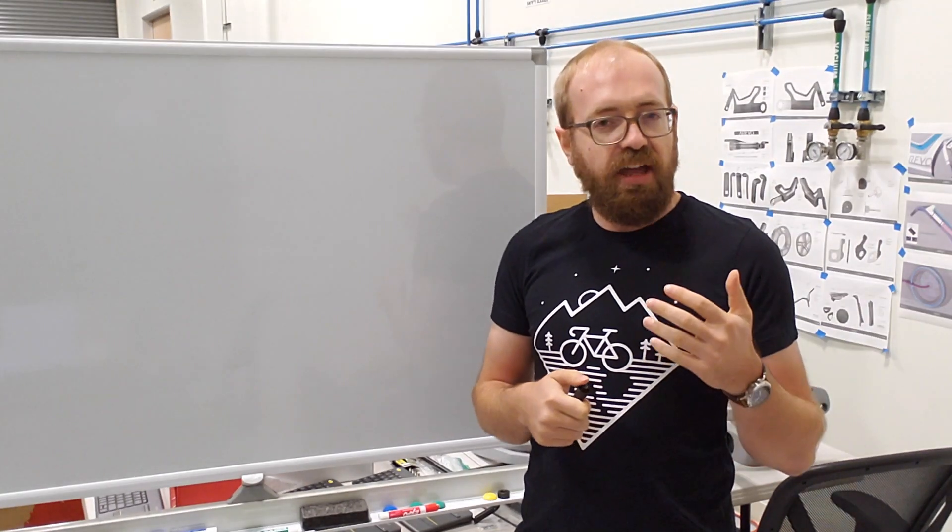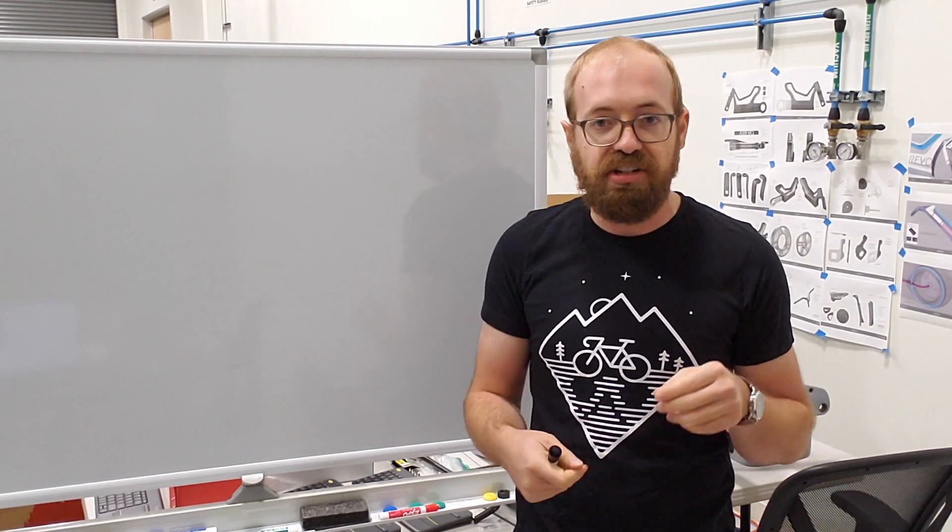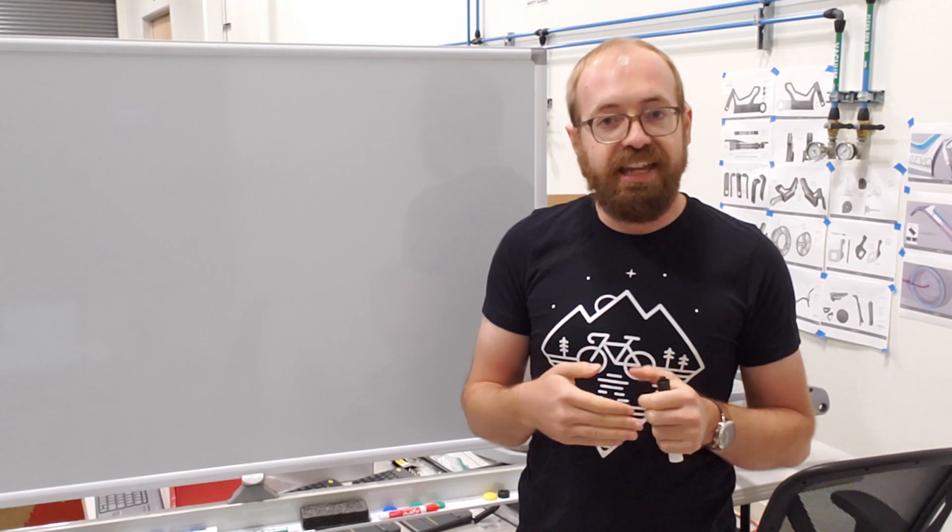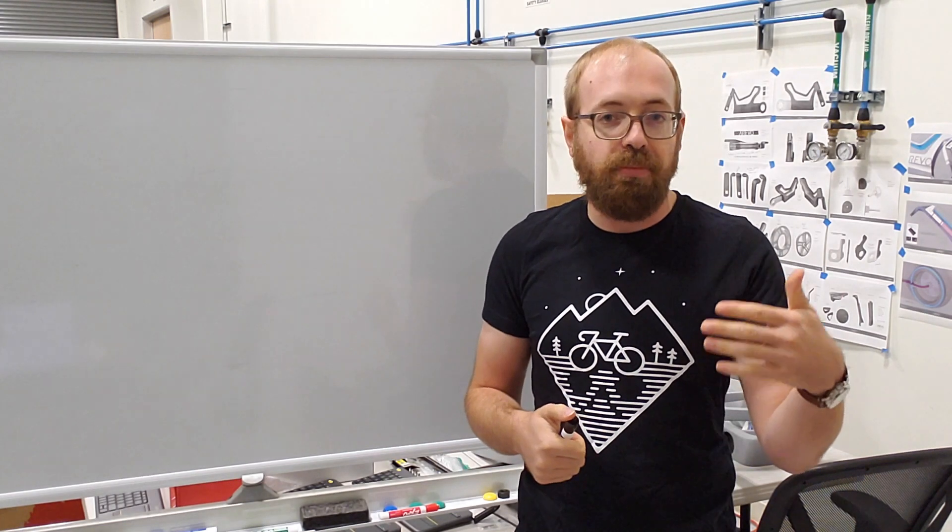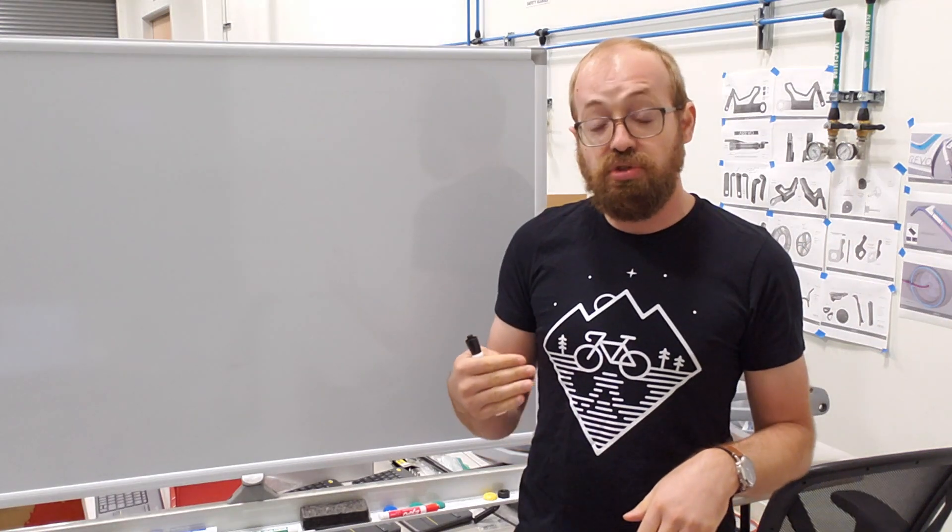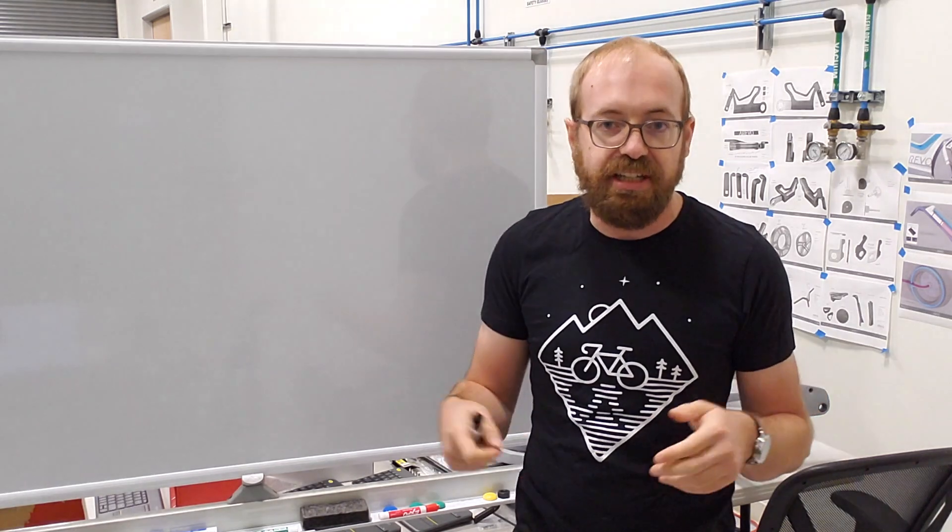You can think about stress as how much force a structure can withstand before failure in a given direction. And strain is like how much deflection it can withstand. Specifically, stress is area-normalized force, and strain is area-normalized deflection.